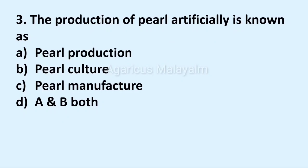Third question: the production of pearl artificially is known as? Answer options: option A, pearl production; option B, pearl culture; option C, pearl manufacture; option D, both A and B. Correct answer: option B, pearl culture.